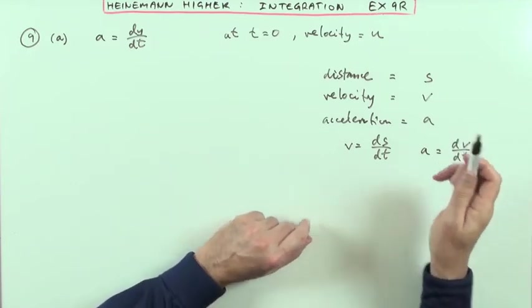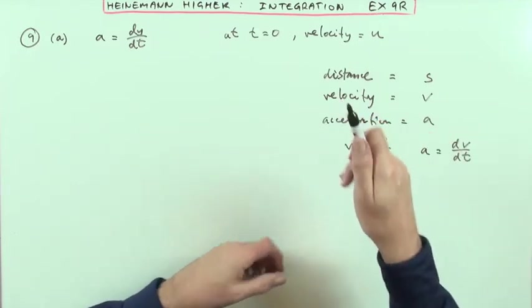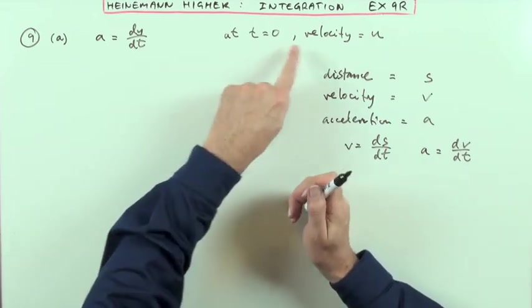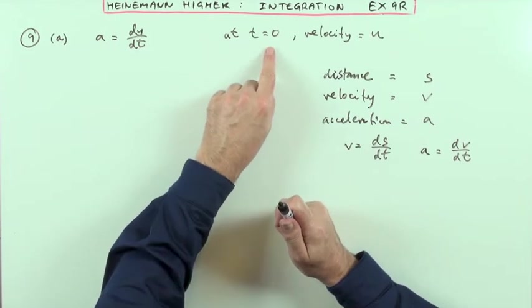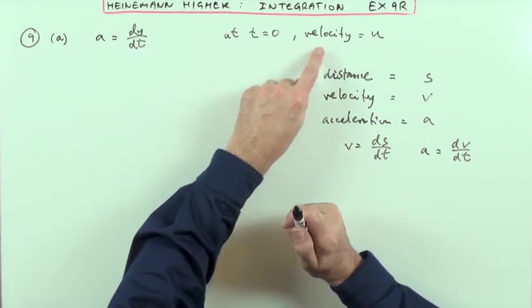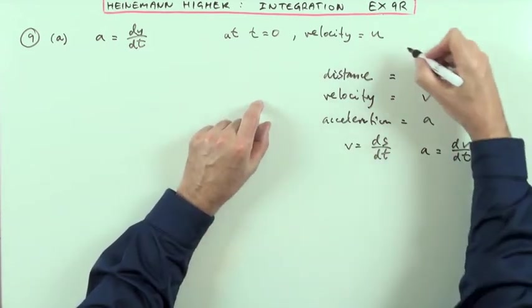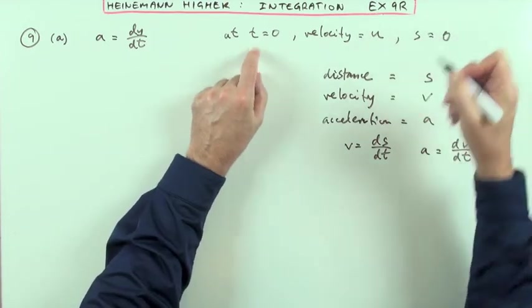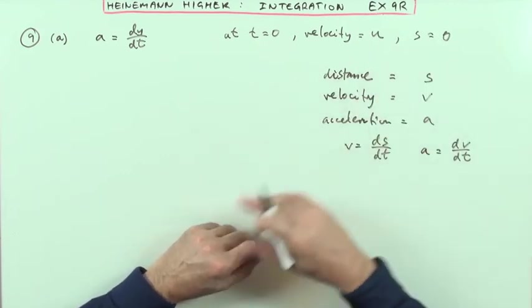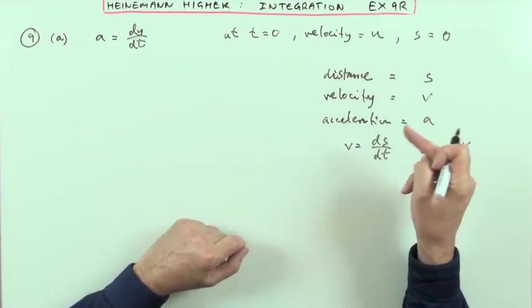But what's integration? Because integration is going to have to have the constants reintroduced. And that's when you have to think of things like initial values. At t equals zero, it tells you its velocity was u. But at t equals zero, it hadn't moved from its starting position yet, so s is going to be zero. You need to know these initial values in order to find these constants.